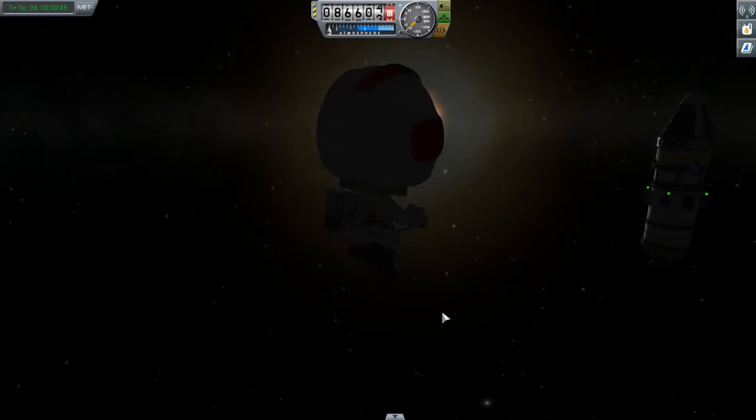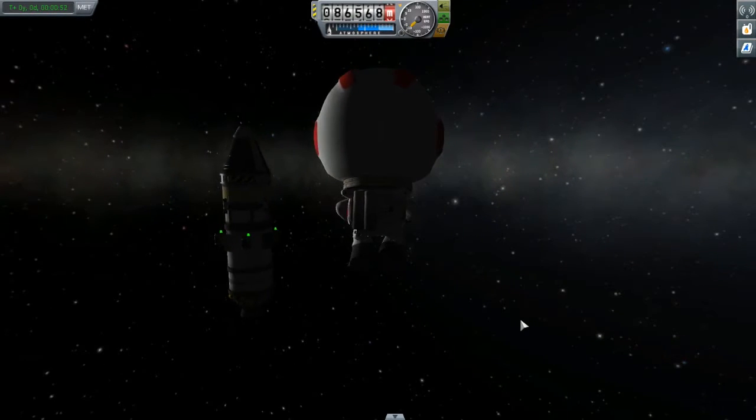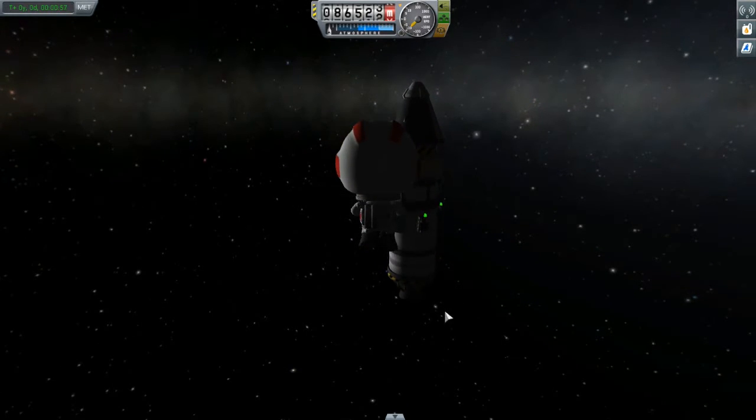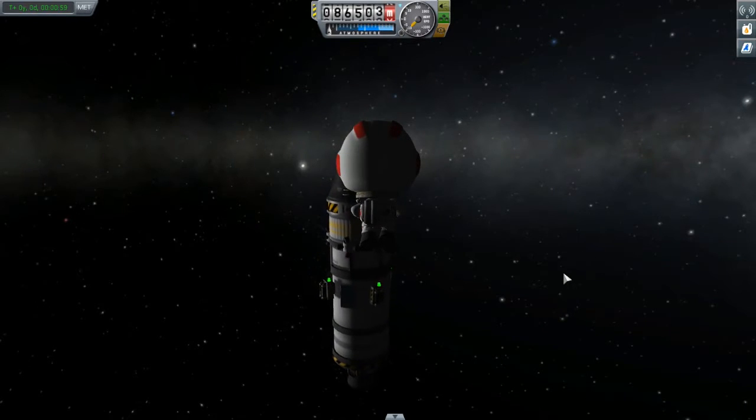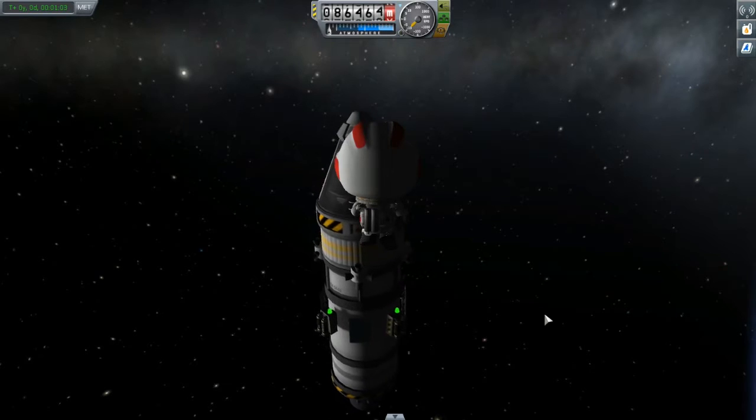In the second part of the video, we'll actually go over the math behind calculating Delta V requirements for any orbital transfer. What I'm going to do is transfer Valentina from her current orbit of 80 kilometers to a circular orbit with an altitude of 300 kilometers.